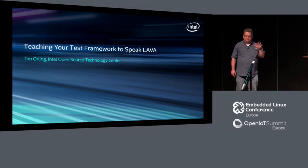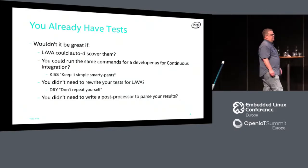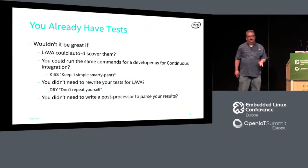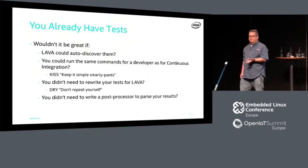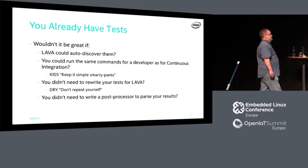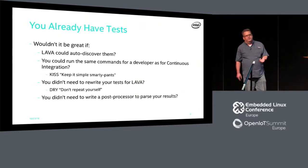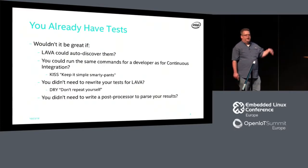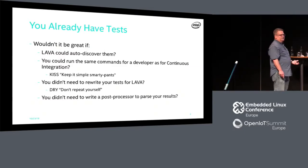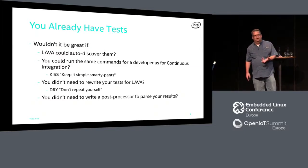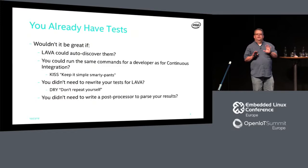I will do my best to not dive too deep to lose you. Most of us already have tests, so we're coming to Lava with tests that already exist — you already have a team that's been writing tests in some kind of a test framework. Wouldn't it be great if Lava could auto-discover your tests, just like PyTest can do? Just point it at a folder, say PyTest, and it goes. Wouldn't it be great if you could run the same commands in your CI system or in Lava as your developers are already running? You don't have to do any special incantations for Lava.